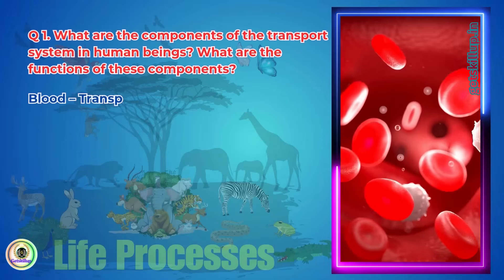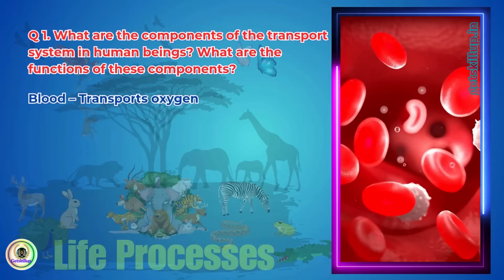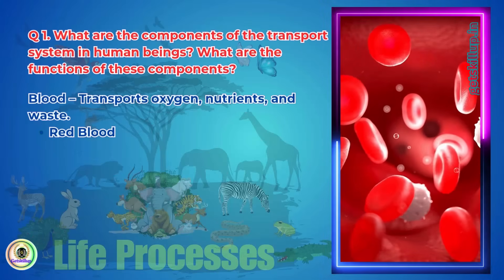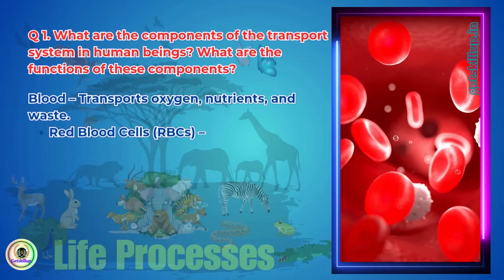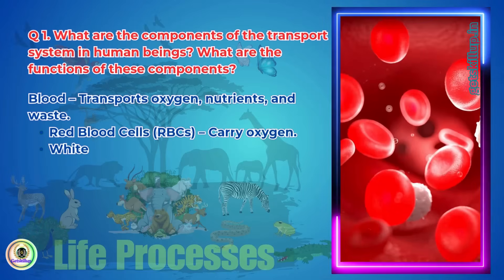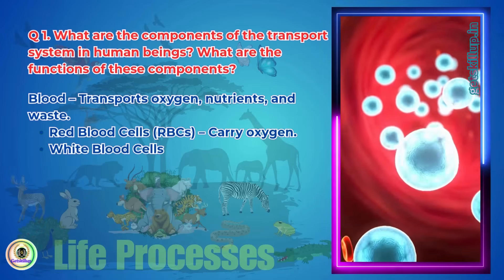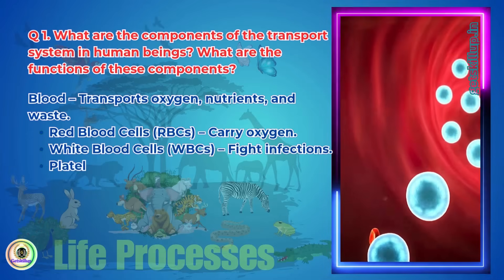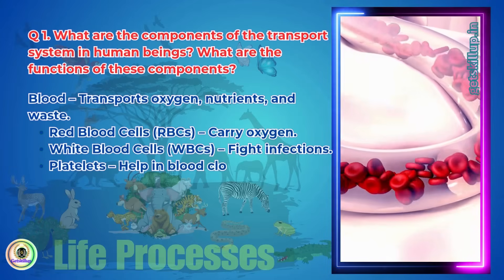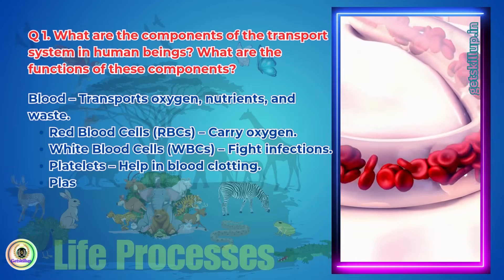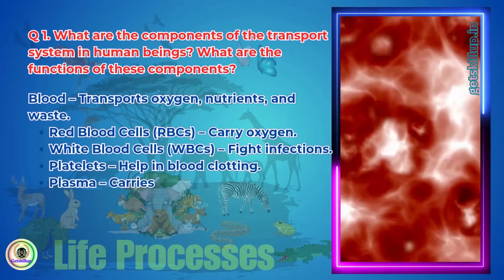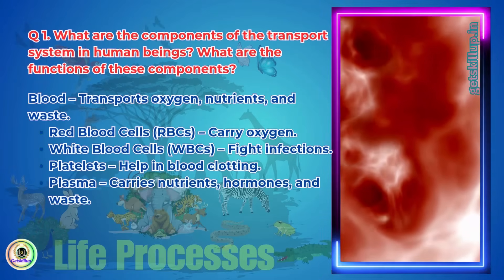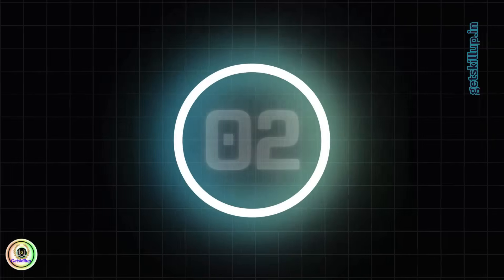Blood transports oxygen, nutrients, and waste. Red blood cells (RBCs) carry oxygen. White blood cells (WBCs) fight infections. Platelets help in blood clotting. Plasma carries nutrients, hormones, and waste.